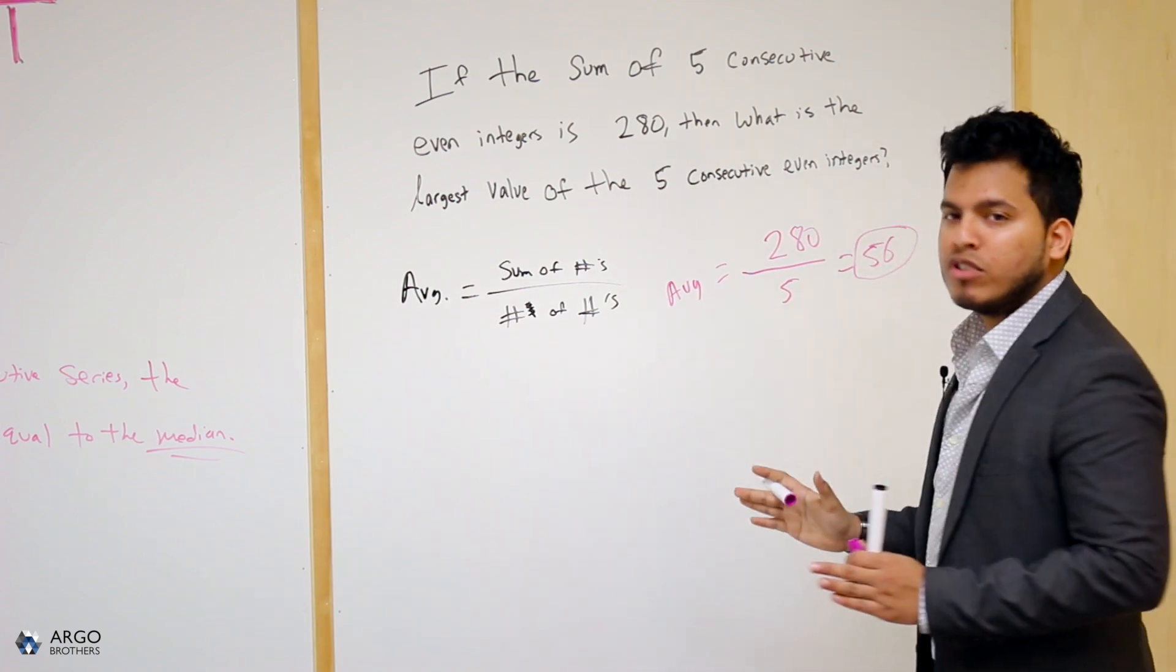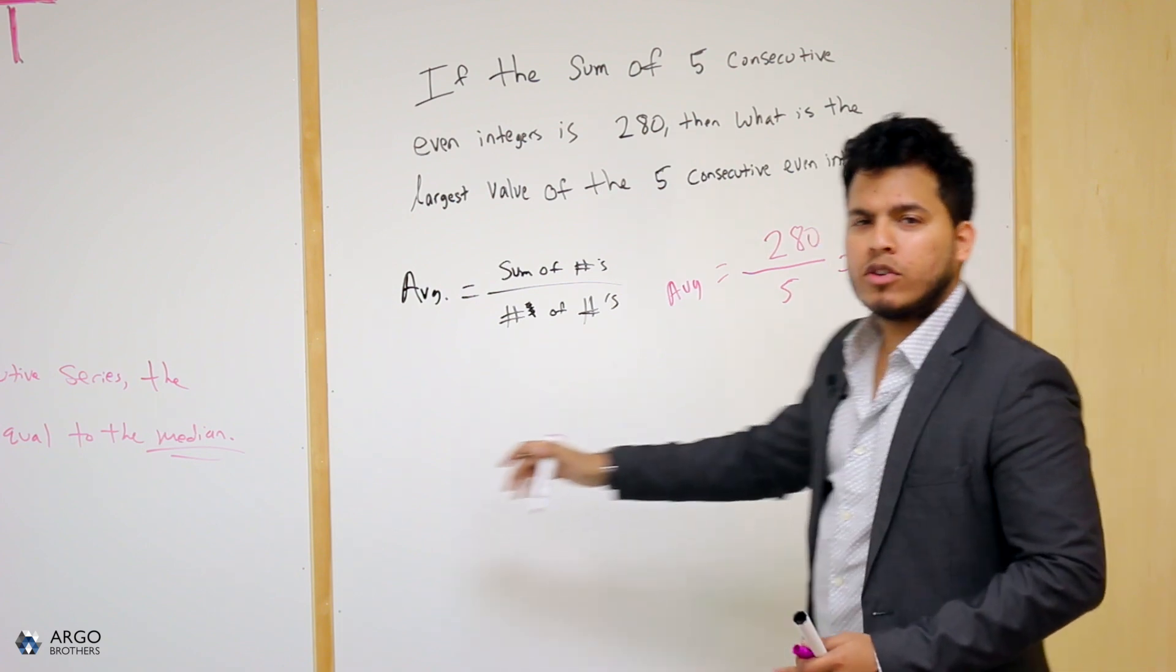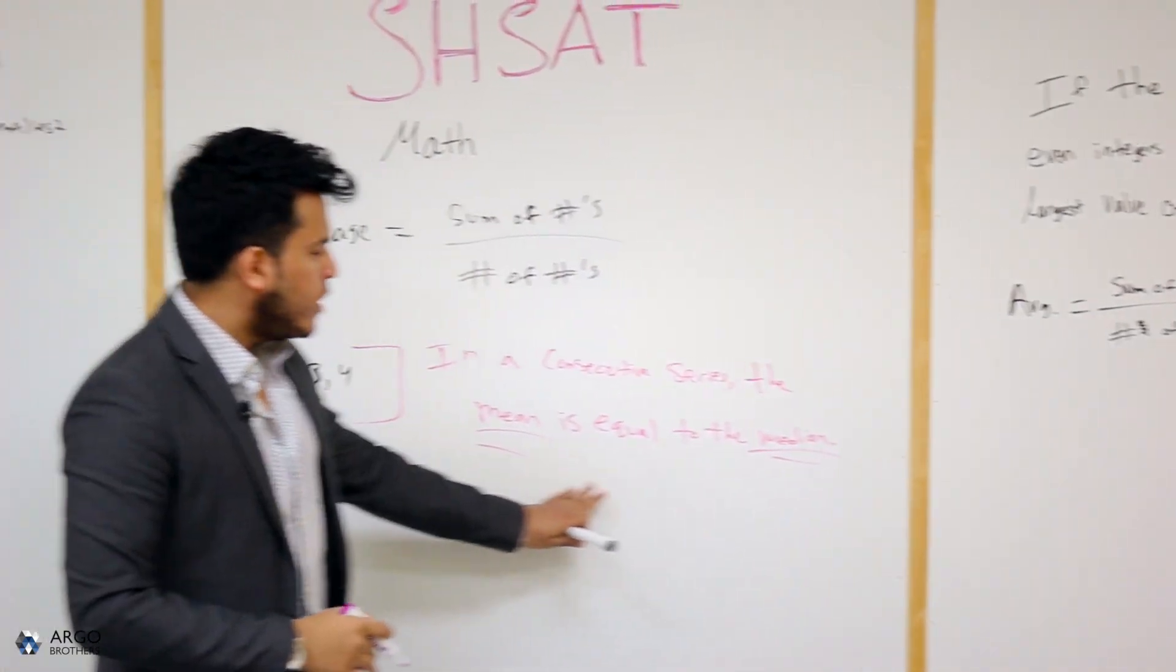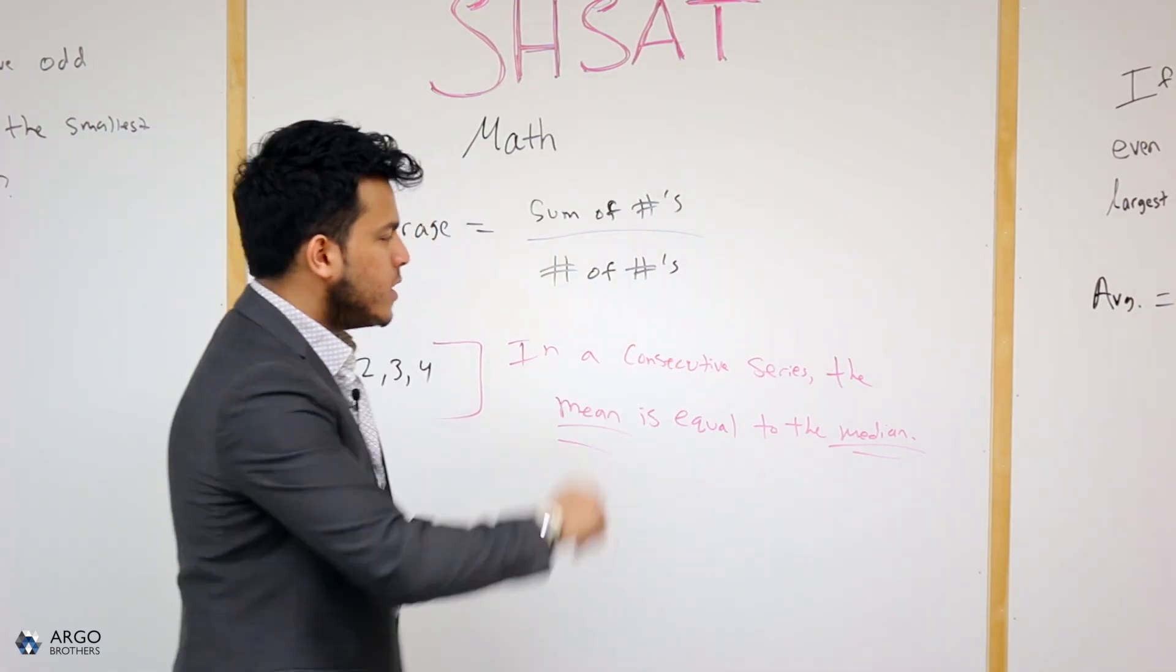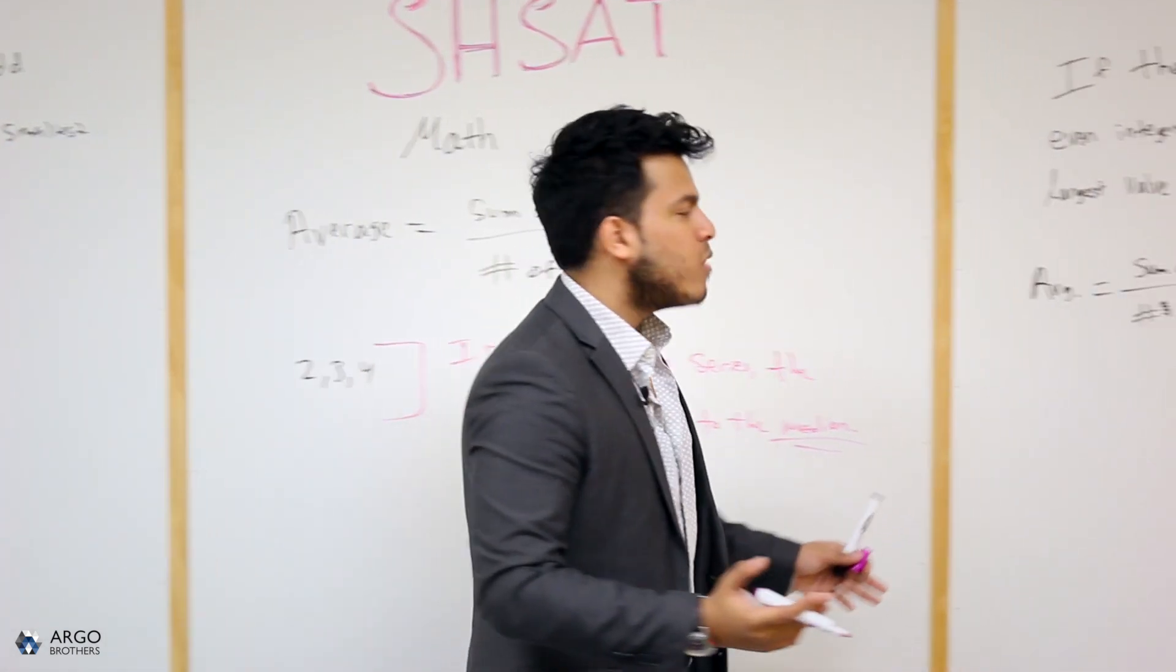So I know that my average is 56, but what else do I know? Let's go ahead and come back to this rule over here. In a consecutive series, the mean, the average is equal to the median. Fifty-six is my middle number. It's the median.